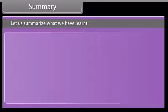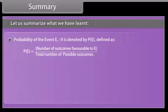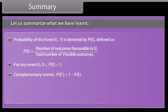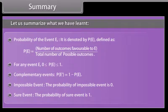Let us summarize what we have learned. P(E) = number of outcomes favourable to E divided by total number of possible outcomes. For any event E, 0 ≤ P(E) ≤ 1. Complementary events: P(not E) = 1 − P(E). Impossible event: P = 0. Sure event: P = 1.